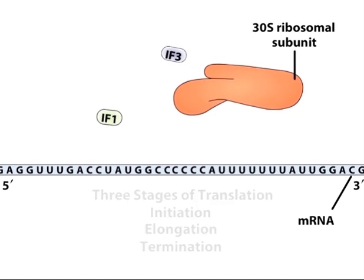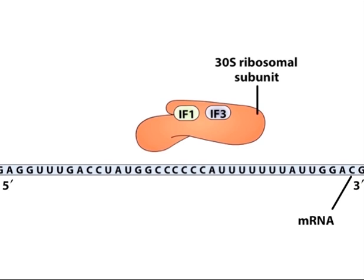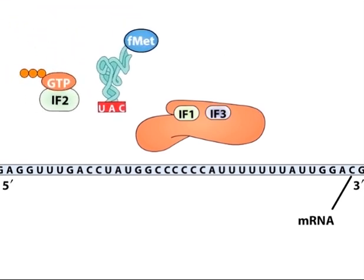In bacteria, initiation begins with the binding of initiation factors to the 30S ribosomal subunit, beginning with IF1 and IF3. The mRNA, the initiator N-formyl methionyl tRNA, and IF2 then join the complex.